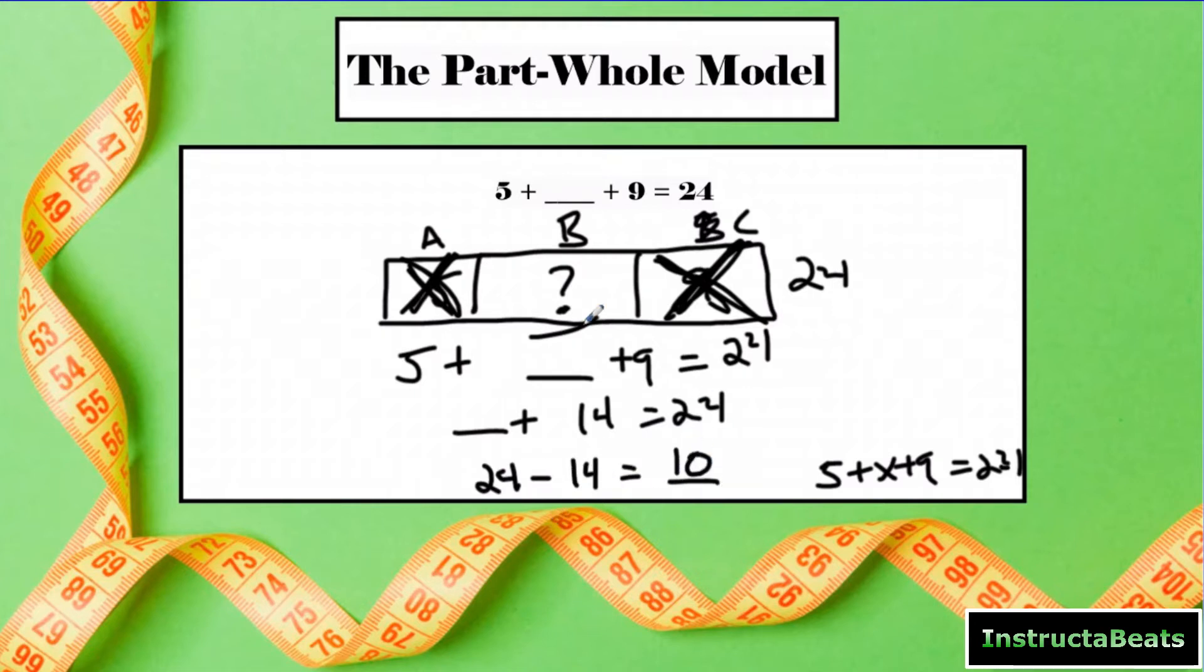So you could rewrite this as subtraction and do 24 - 14 = 10. So this missing piece up here is 10.